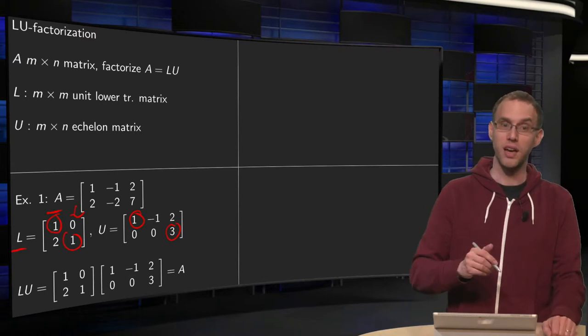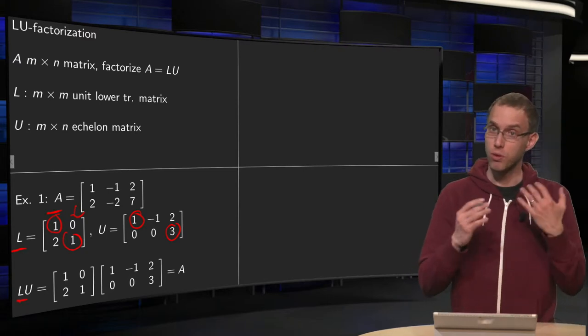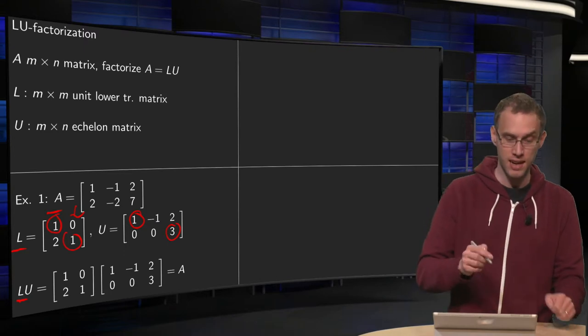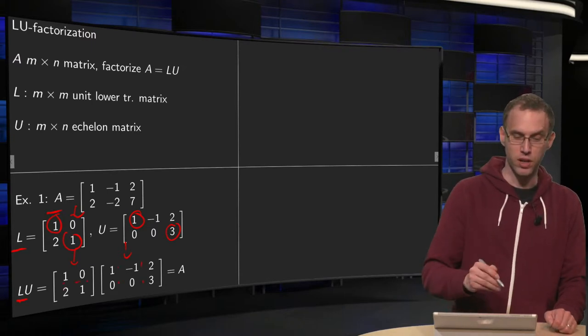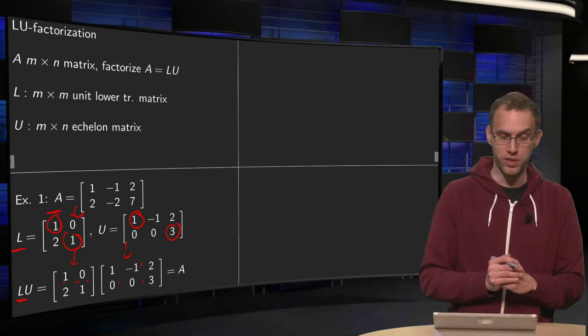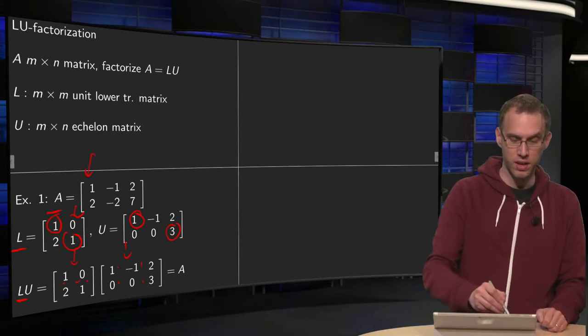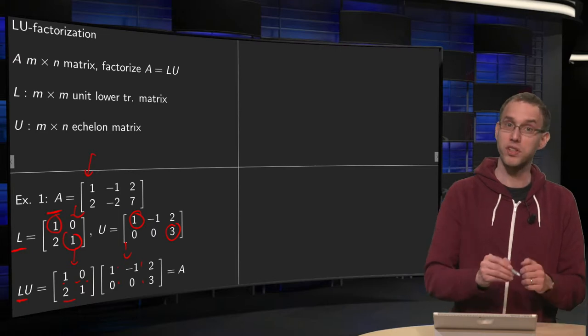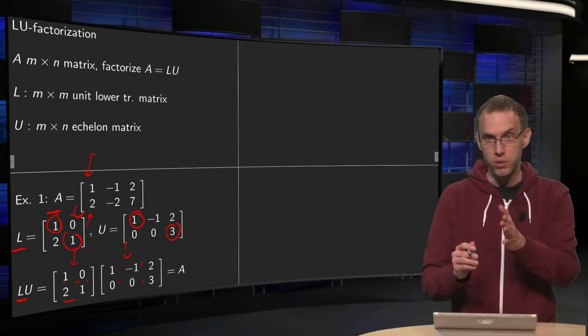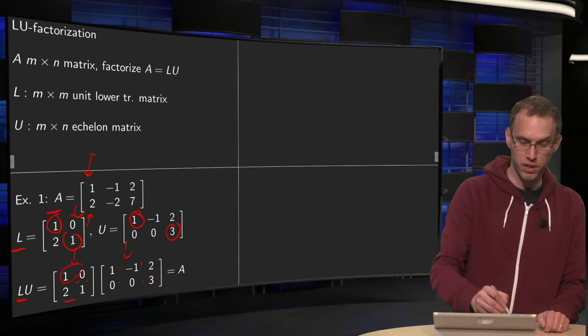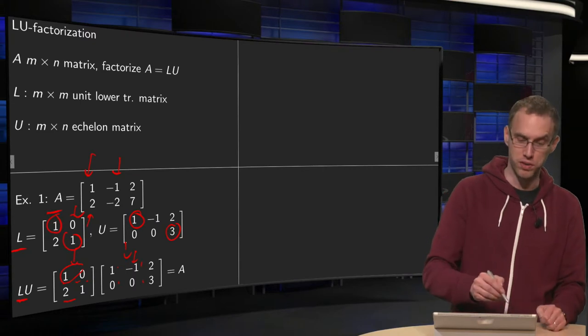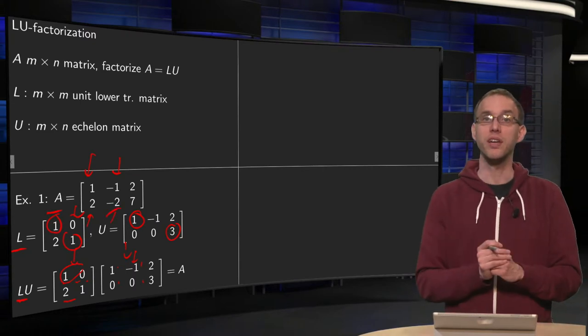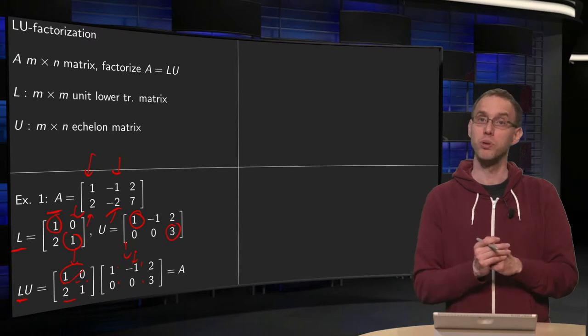And now we can compute L times U. So if we compute L times U, see whether we get A. Use for example the row column rule. So 1, 0 in a product with 1, 0 gives you a 1, correct. And then the 2, 1 in a product with 1, 0 gives you a 2, correct. And then we continue with the next column. 1, 0 in a product minus 1, 0 gives you a minus 1. 2, 1 in a product with minus 1, 0 gives you a minus 2, and so on. And you see indeed if you compute L times U, you get indeed A.